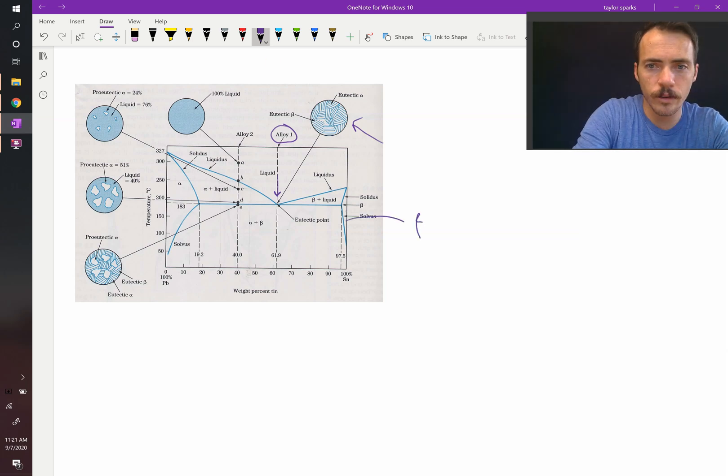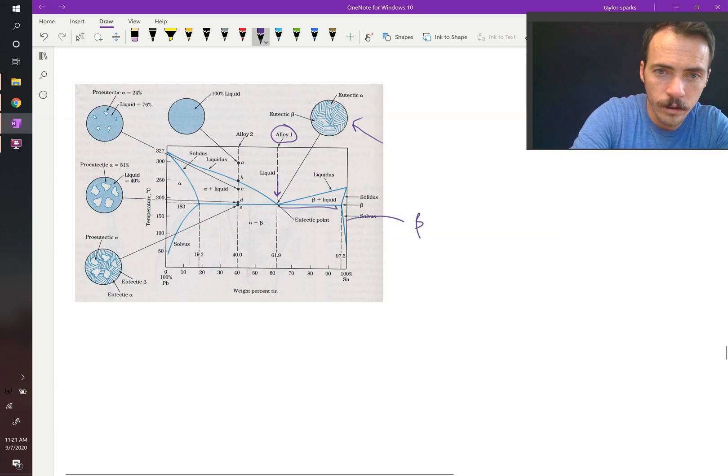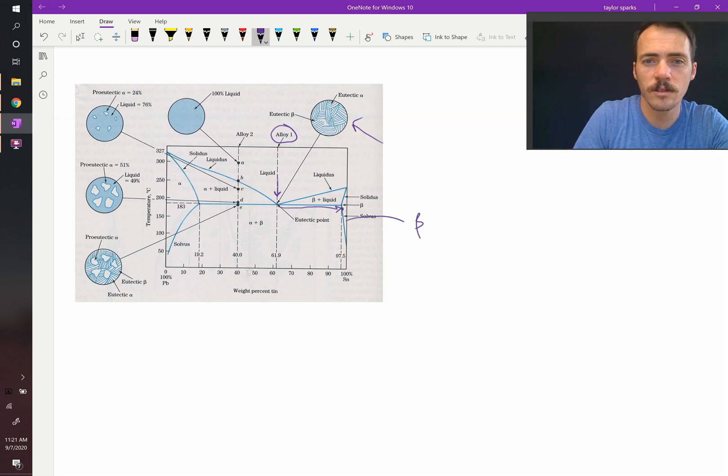So again this is your beta phase over here, pure tin. It's not pure tin, it's actually 97.5% tin, right? You could draw the line over here and it intersects right there. So at 97.5% tin, it's almost pure tin.